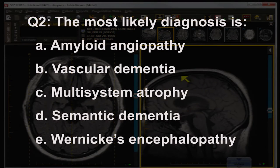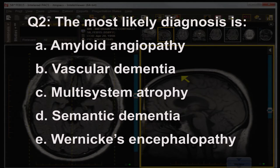Given the history, the most likely diagnosis is: A, amyloid angiopathy; B, vascular dementia; C, multisystem atrophy; D, semantic dementia; or E, Wernicke's encephalopathy.